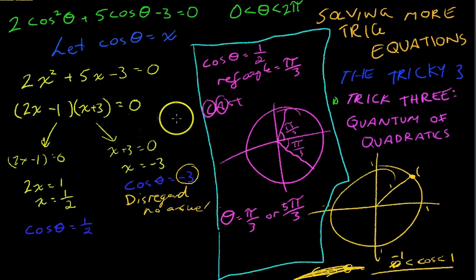That brings a close to our trilogy, the Tricky Three. Really, here, when it comes to quadratics, let cos theta equal x and solve it. You can solve this - you don't have to factorize it like I did here. You can use your quadratic formula if you like to get those two answers.